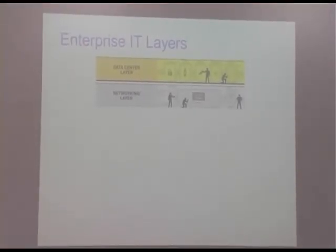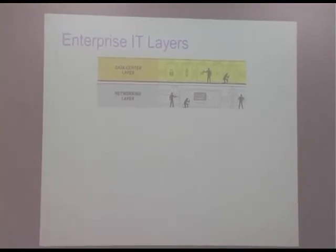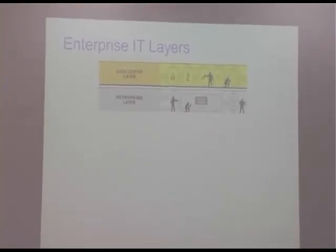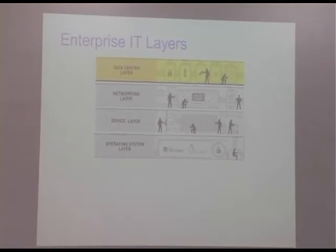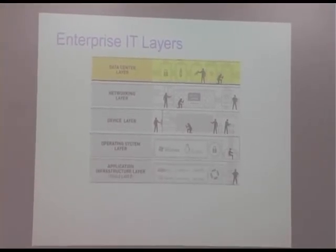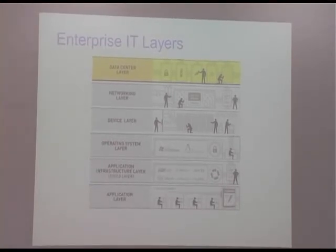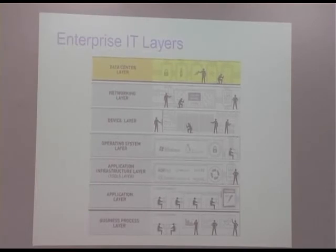The second layer is networking — if you don't have the networking layer correctly set up, it's going to mess up. Third is the device layer — what devices you are going to put in the data center. Fourth is the operating system layer — what OS you are going to use. Fifth is application infrastructure — what infrastructure you need to develop your application or manage your business. Sixth is the application layer — which IT department handles which application. And finally, the business process layer — what processes need to be in place to accomplish everything.